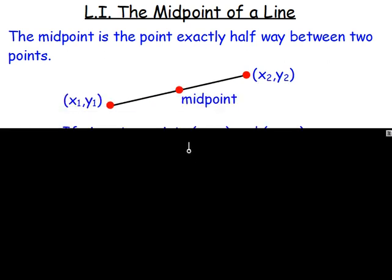For example, if we have this line here, we've got two points with x and y coordinates. The midpoint is just going to be halfway along that line, so these two segments would be the exact same length.